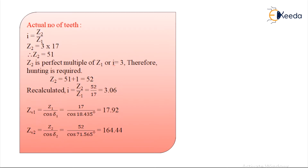Since Z2 is a perfect multiple of Z1 and i = 3 is a perfect integer, hunting is required. So Z2 = 51 + 1 = 52. Recalculating i = Z2 / Z1 = 52 / 17 = 3.06. ZV1 = Z1 / cos(delta1) = 17 / cos(18.435°) = 17.92, and ZV2 = Z2 / cos(delta2) = 52 / cos(71.565°) = 164.44.